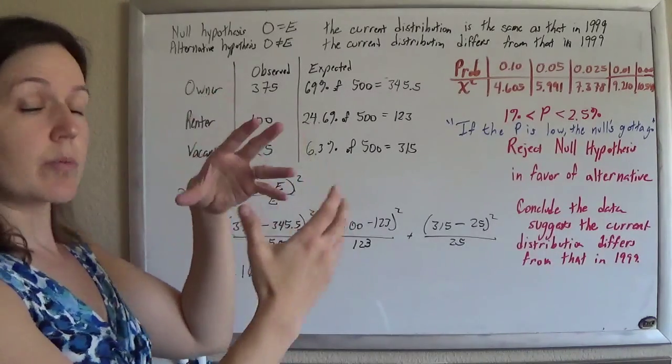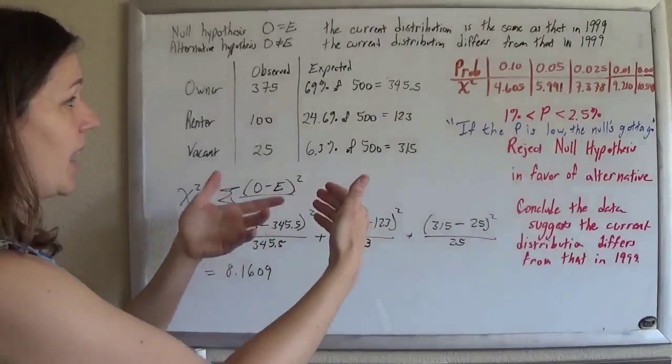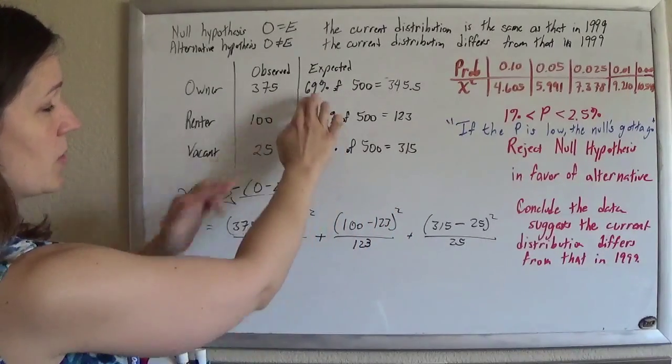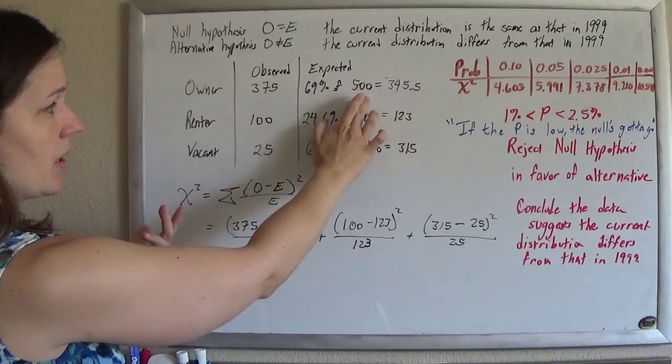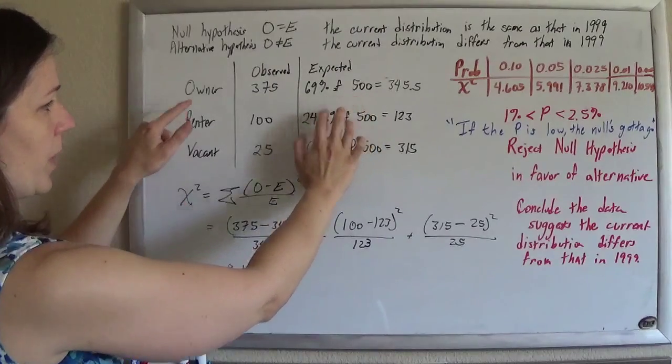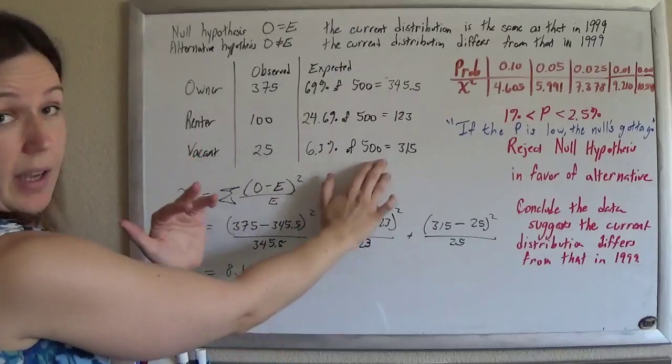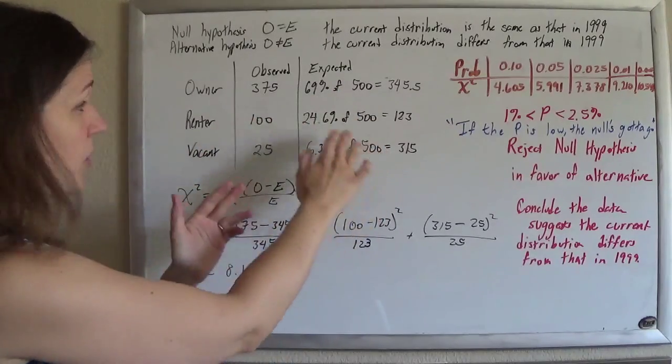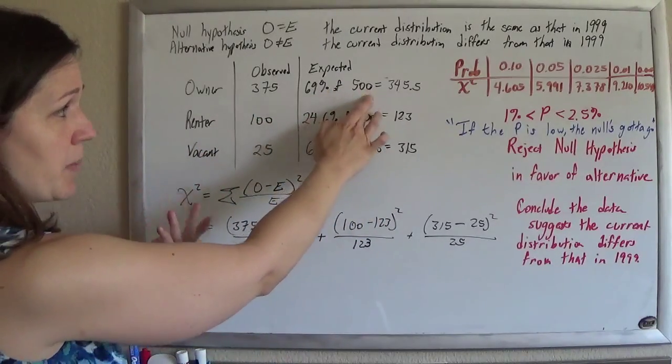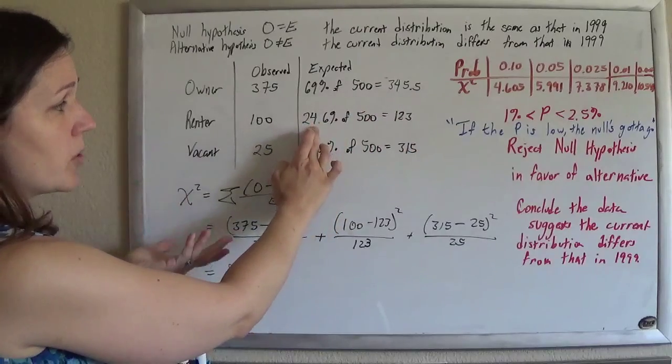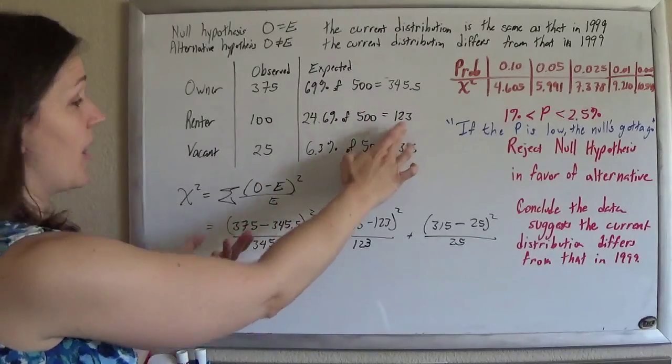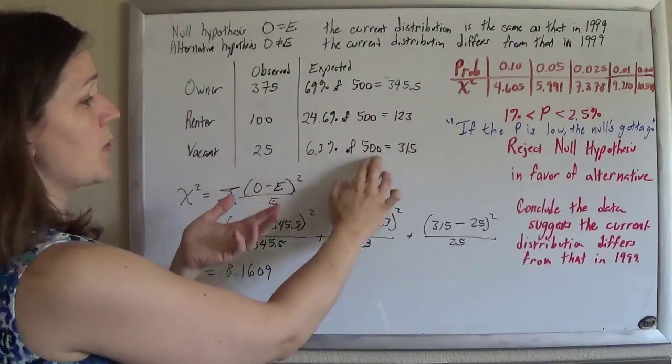And so if the distribution were the same as in 1999, you'd expect the same percentages. So 69% of the housing units would be owner-occupied, 24.6% would be renter. So you just punch these numbers in on your calculator, it's 0.69 times 500 gives you that, 0.246 times 500 gives you that, 0.063 times 500 gives you that.